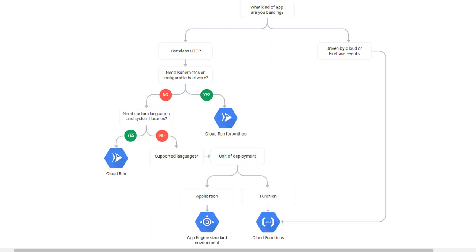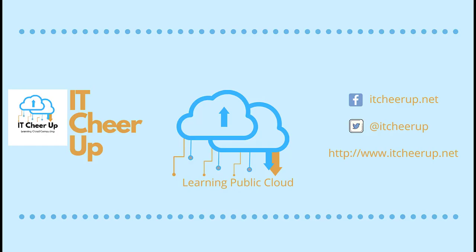The serverless options decision tree will help you understand specific requirements such as stateful HTTP versus event-driven, Kubernetes versus configurable hardware, custom language and system binaries, or unit deployment. Well, this is what we have for today. Thank you for your time and see you in the next lecture.